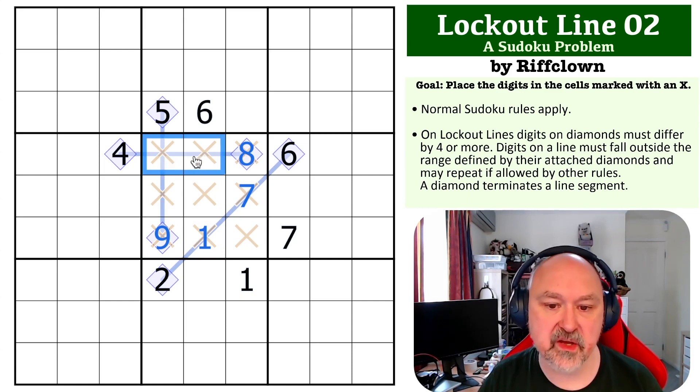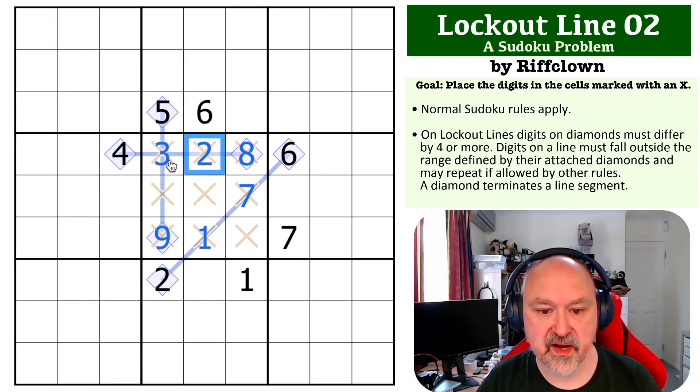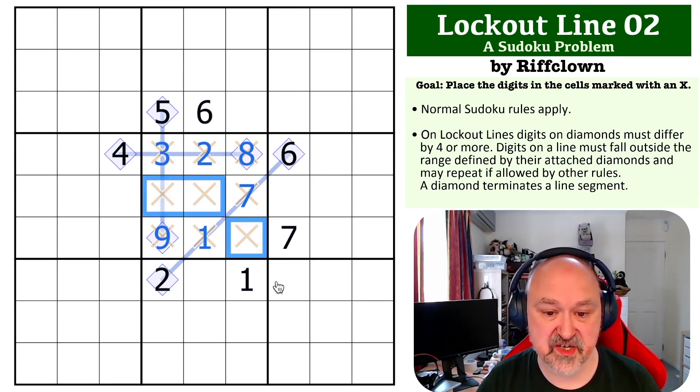Now we can look at this line. Because this is four and eight, this can only be from one, two, three, and nine. Well, one and nine are both gone because they're already in the box, and this two makes this three and this two.